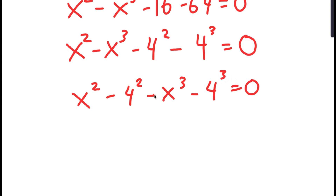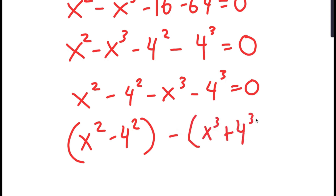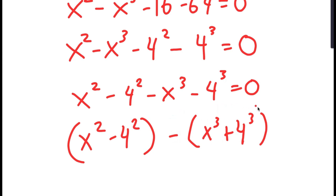There are two properties that I'm going to use. I'm going to rewrite this as x squared minus 4 squared, and group this minus x to the power of 3 plus 4 to the power of 3 — we put this plus because this negative sign distributes.